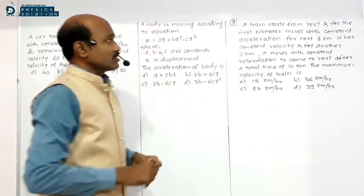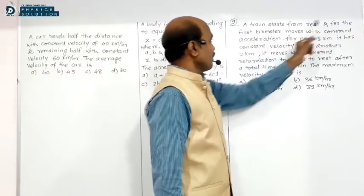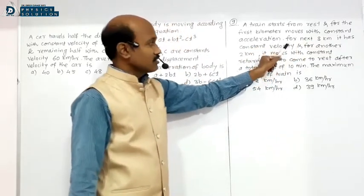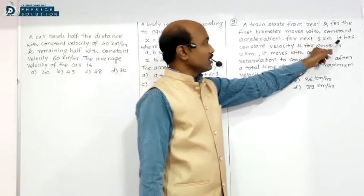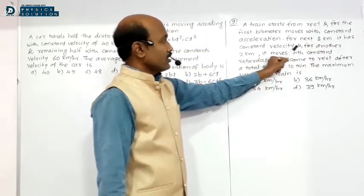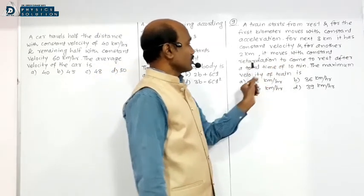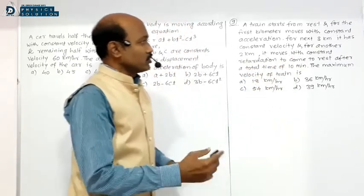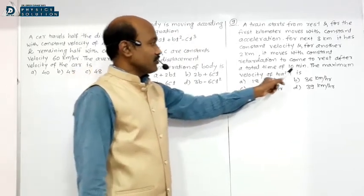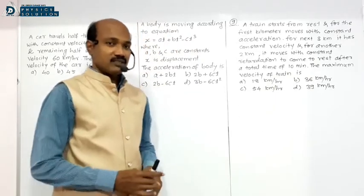A train starts from rest and for the first kilometer moves with constant acceleration. For the next 3 kilometers it has constant velocity, and for another 2 kilometers it moves with constant retardation to come to rest. After a total time of 10 minutes, the maximum velocity of the train is?